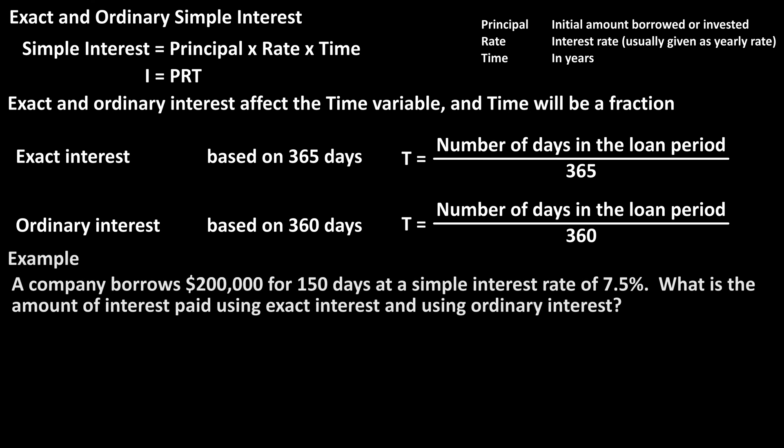As a comparison example, let's say that a company borrows $200,000 to upgrade its facility. The loan will be for 150 days at a simple interest rate of 7.5%. What is the interest paid using exact interest and using ordinary interest?